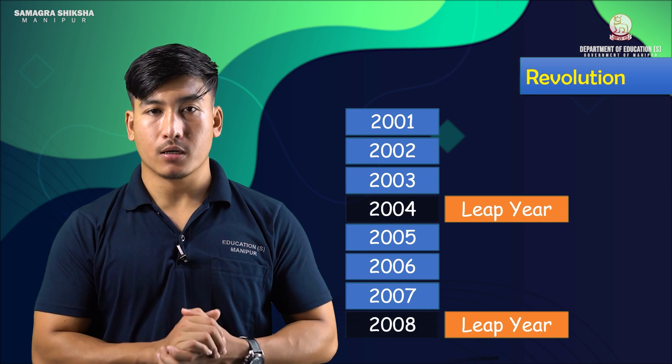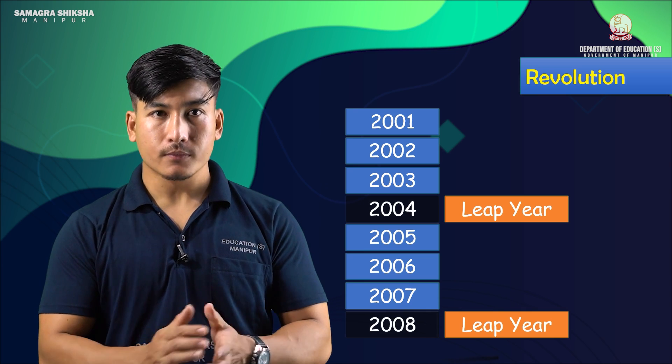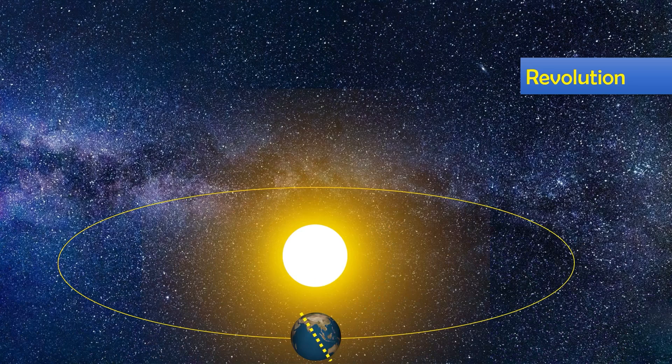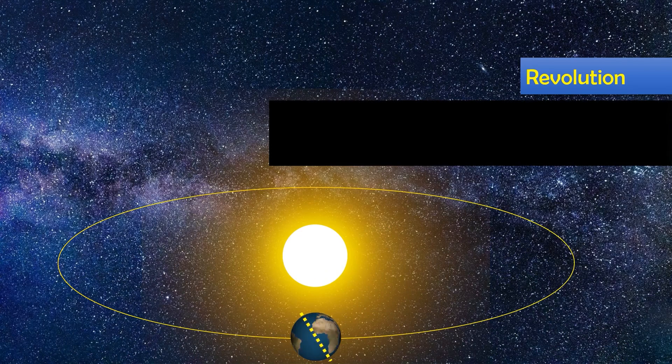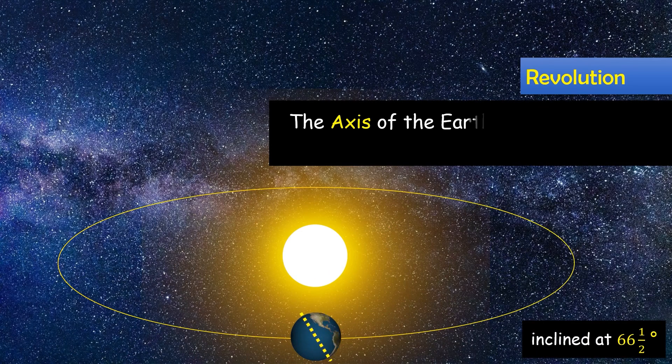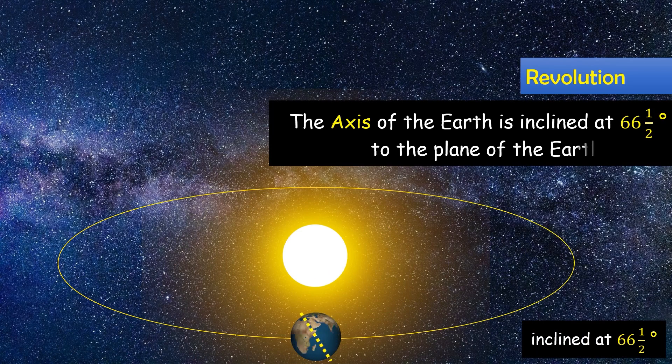The axis of the earth is inclined at 66 and a half degrees to the plane of the earth's orbit.